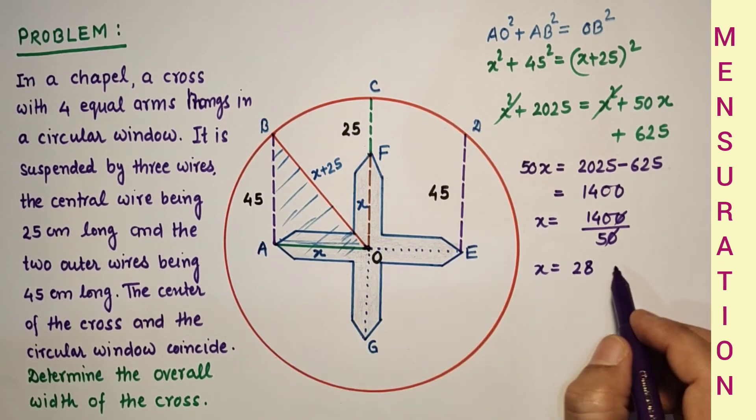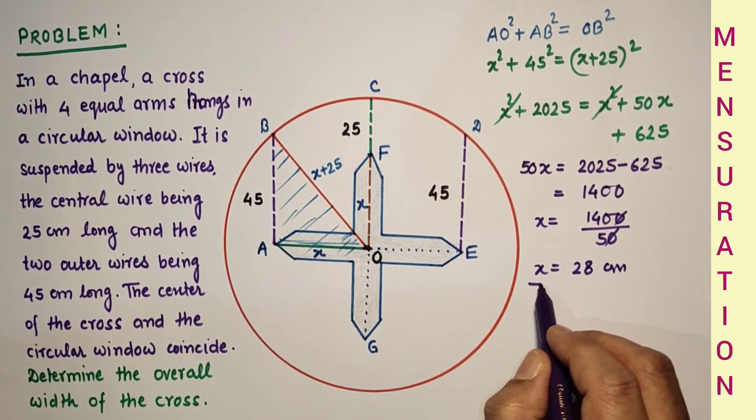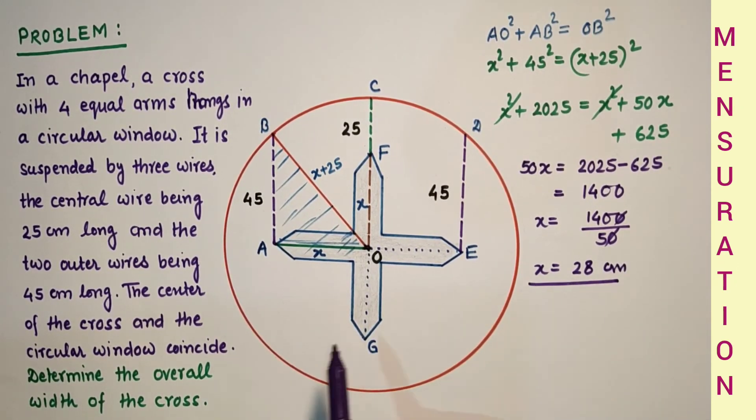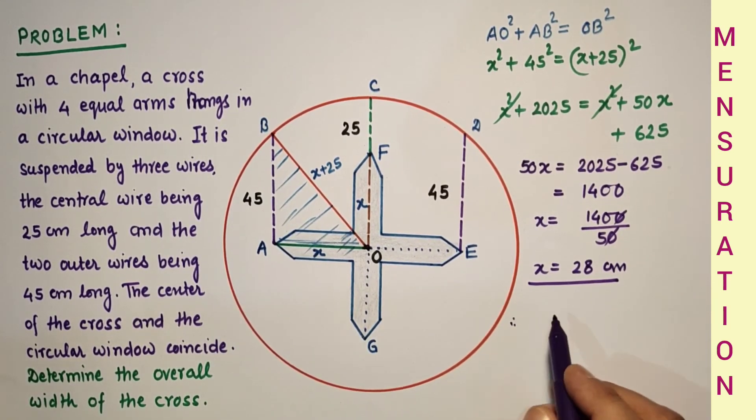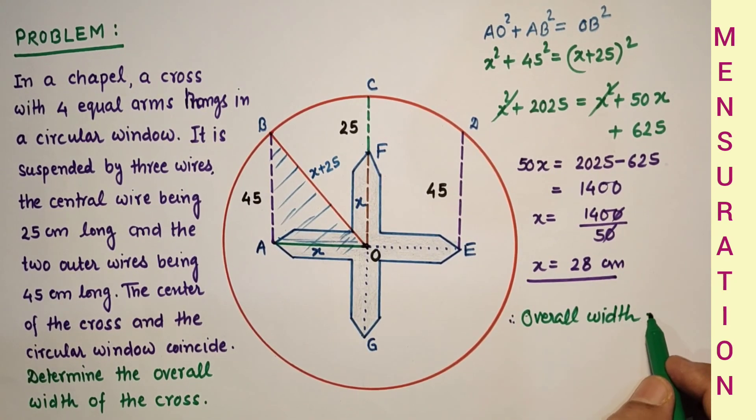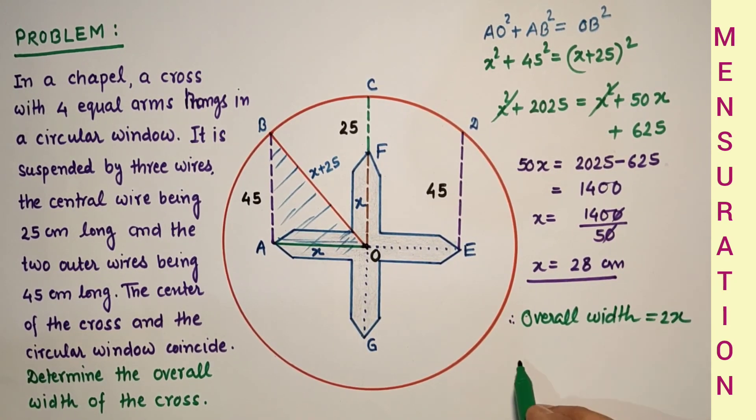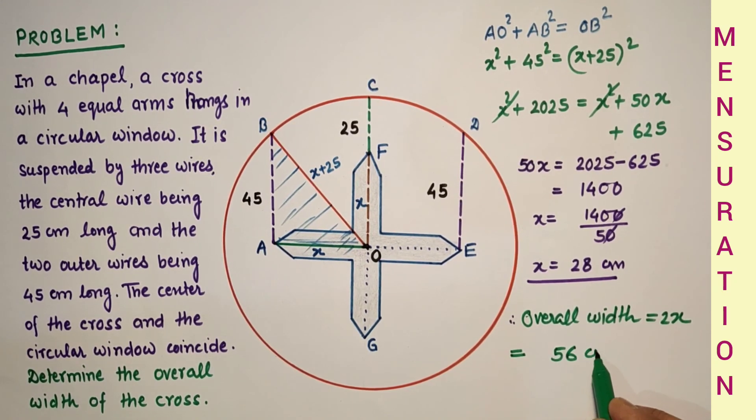So overall width is equal to AE, and AE is equal to 2X. Therefore, overall width is equal to 2X, and that is equal to 56 centimeters. And this is the answer.